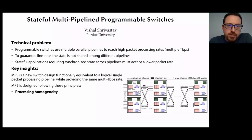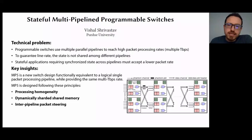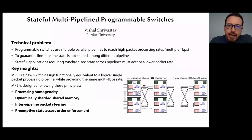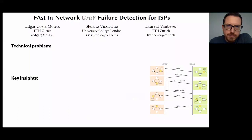The design is based on processing homogeneity, meaning that all pipelines run the same identical program. Memory is dynamically sharded among pipes and shared, so it can be updated by any packet. There is inter-pipeline packet steering, meaning a crossbar between every two consecutive stages so that a packet can move from one pipeline to a different one. And there is preemptive state access order enforcement, which enforces packet ordering since packets can now move among pipes and could be reordered. The paper also describes a new language and compiler to program MP5, and shows that the hardware design requires only a small additional area.